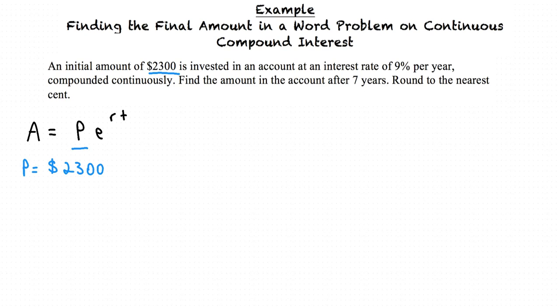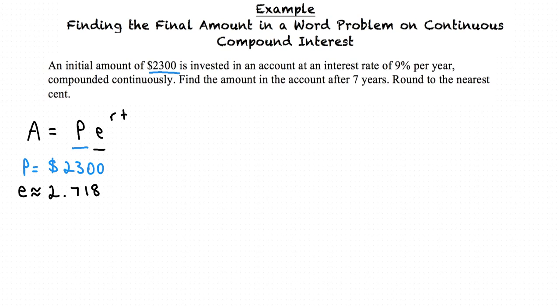e is a constant and is approximately 2.718. r is the rate of growth, and in our problem the rate of growth is 9% per year.